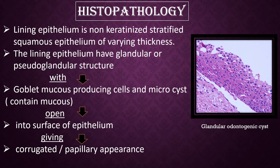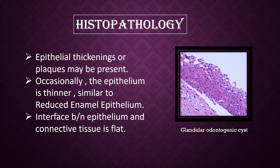Histopathology: The lining epithelium is non-keratinized, stratified squamous epithelium of varying thickness. The lining epithelium has glandular or pseudoglandular structures with goblet mucus-producing cells and microcysts which contain mucus. These open onto the surface of the epithelium, giving a corrugated or papillary appearance. Epithelial thickenings or plaques may be present. Occasionally, the epithelium is thinner, similar to reduced enamel epithelium.